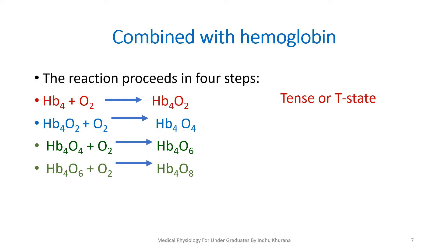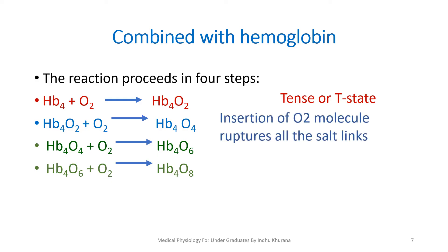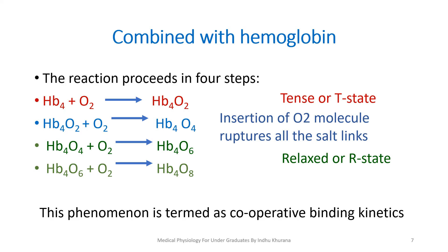Initially in the first step, hemoglobin is in a tense state. In the further steps, there is rupture of the salt bridges, so hemoglobin becomes relaxed. This phenomenon is termed cooperative binding kinetics. This is the reason why our oxygen dissociation curve is sigmoid in shape. You can write all these steps in your answer.